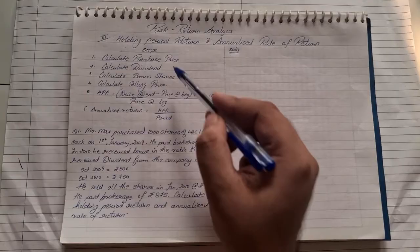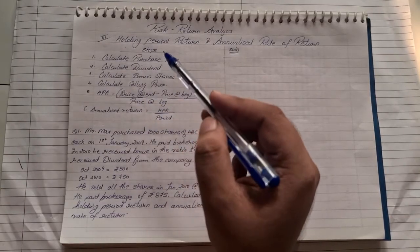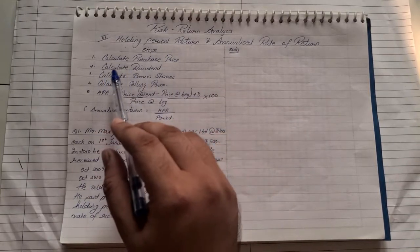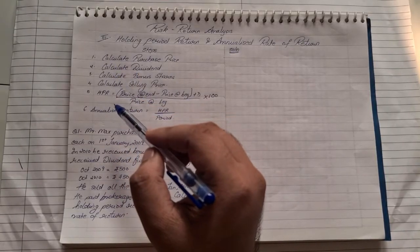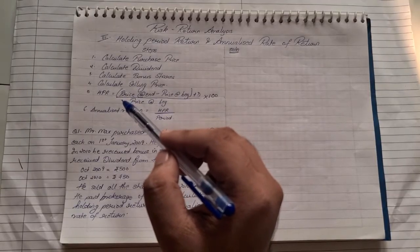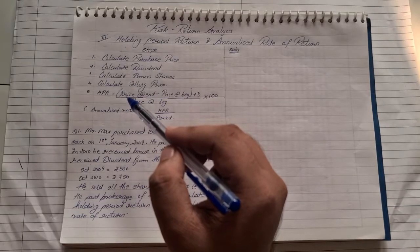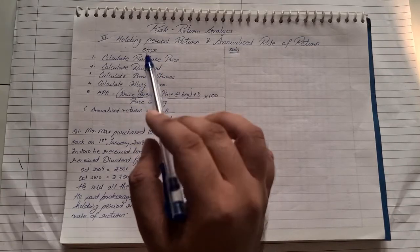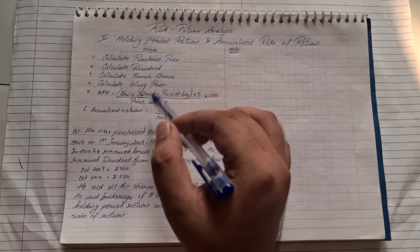Now, this is the complete set of steps that are required to solve the sum. In each and every sum, all these things won't be given. But we are going to take one comprehensive sum which will have all the things. For example, if a sum does not have bonus share, step number 3 will get skipped out. If it doesn't have dividends, step number 2 gets skipped out. But these are all the steps that need to be followed based on the question.